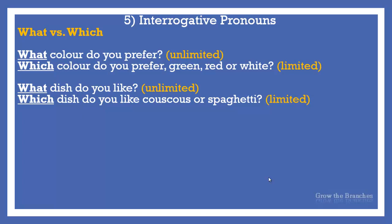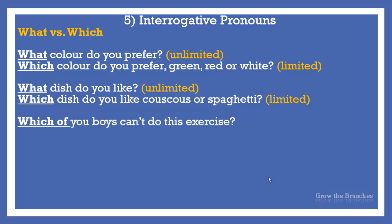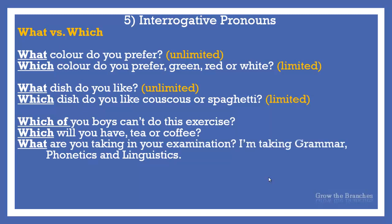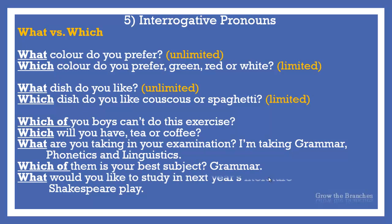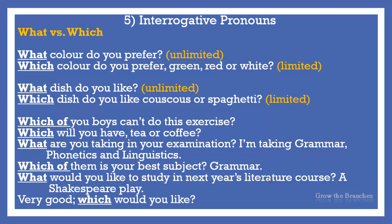When it comes to which as the interrogative pronoun, the choice with which is usually made more explicit by the use of which of. Consider the following examples: Which of you boys can't do this exercise? Which will you have — tea or coffee? What are you taking in your examination? — I'm taking grammar, phonetics, and linguistics. Which of them is your best subject? — Grammar. What would you like to study in next year's literature course? — The Shakespeare play. Very good — which would you like?